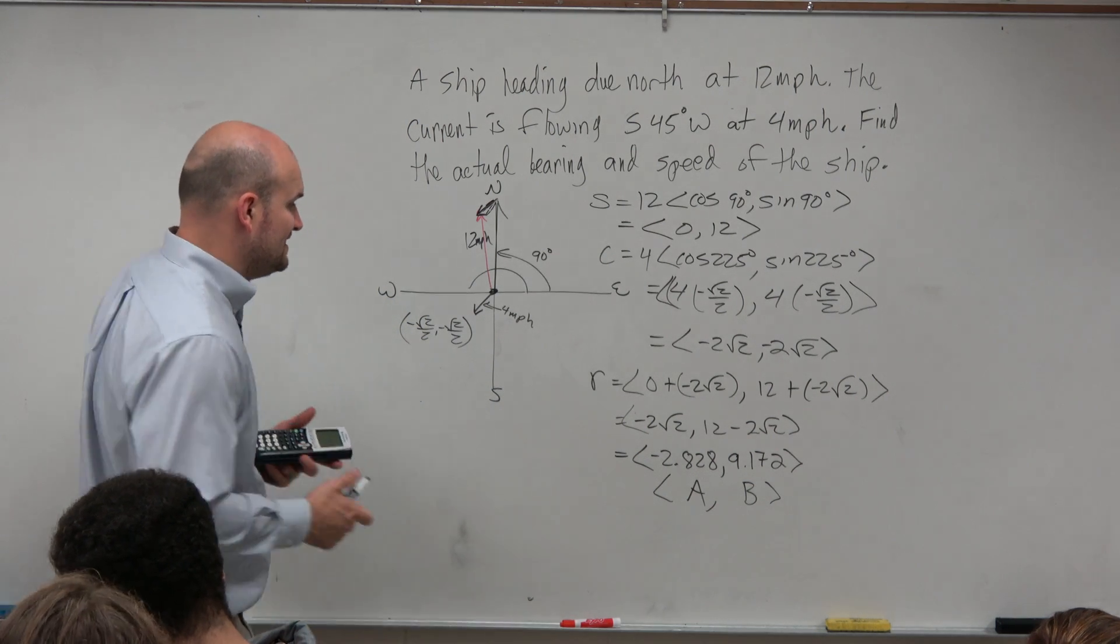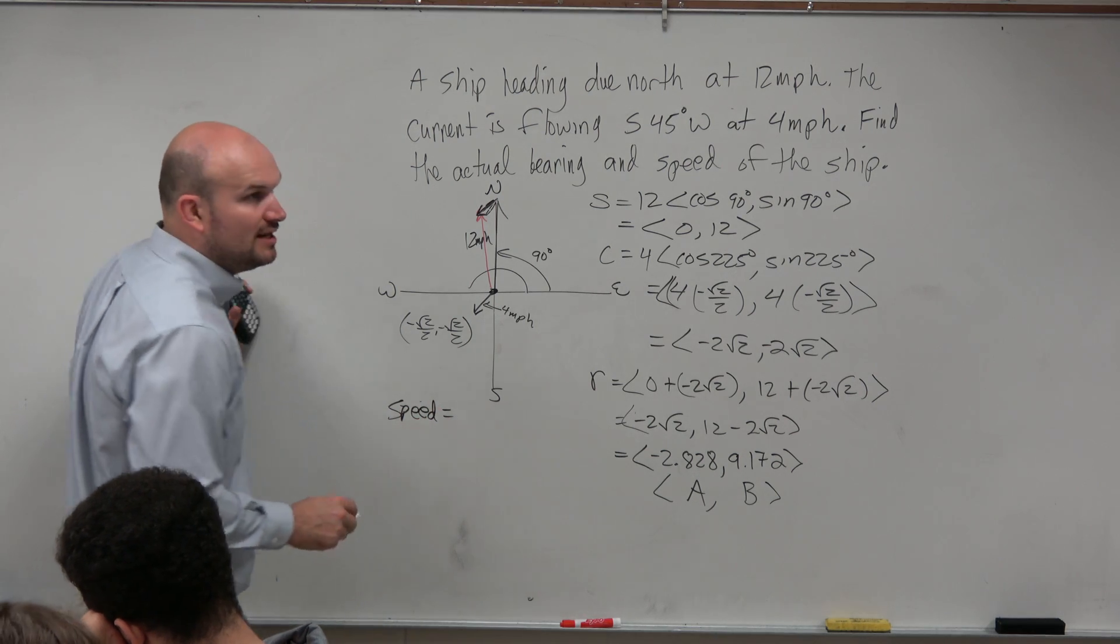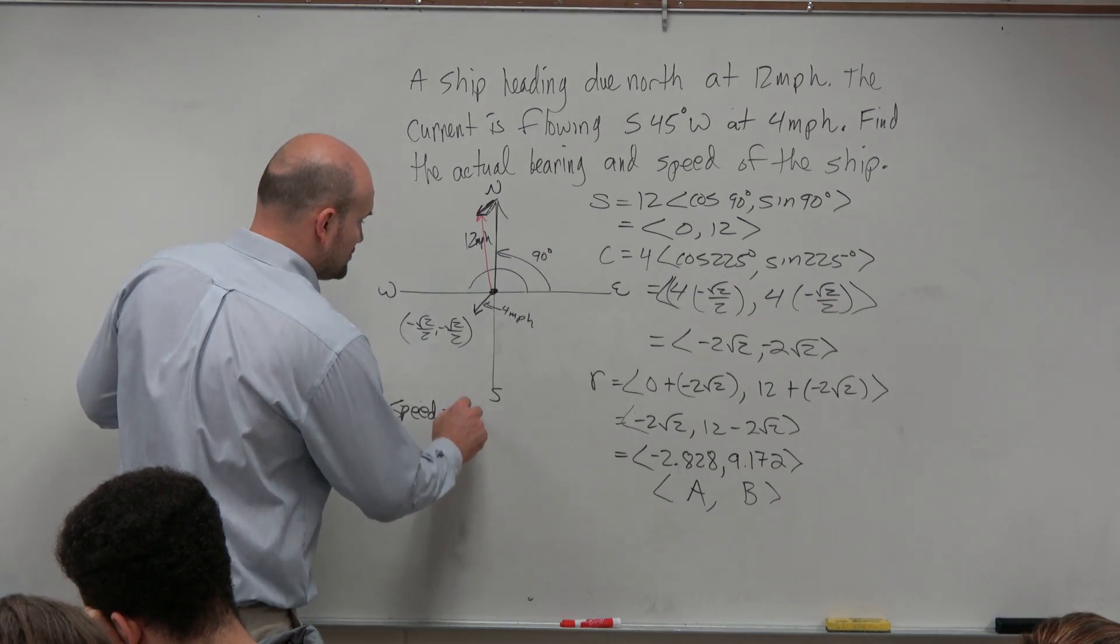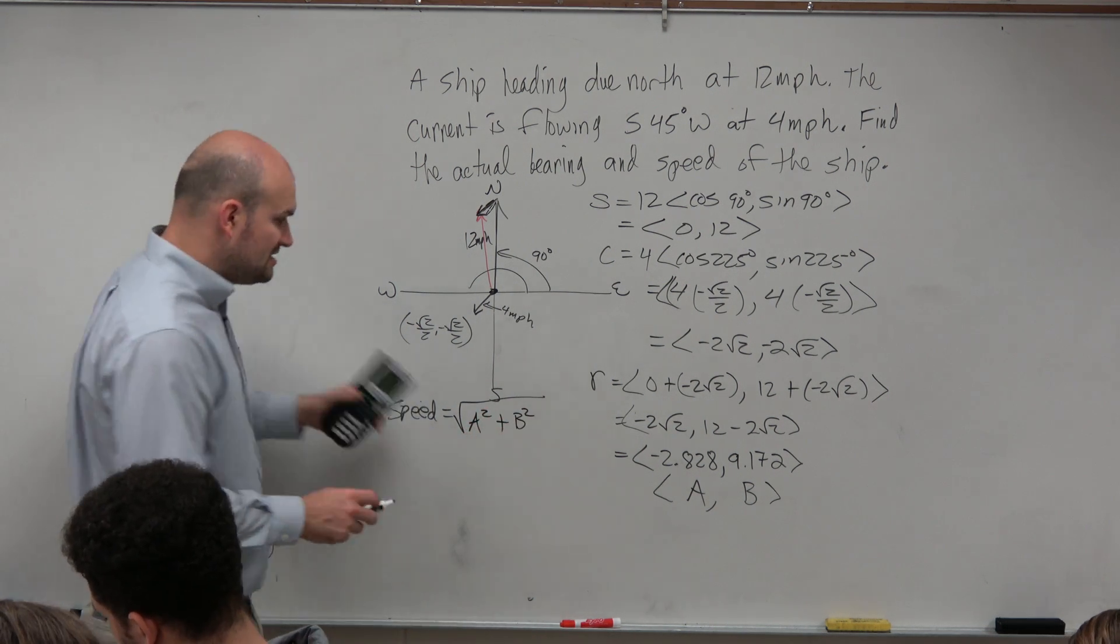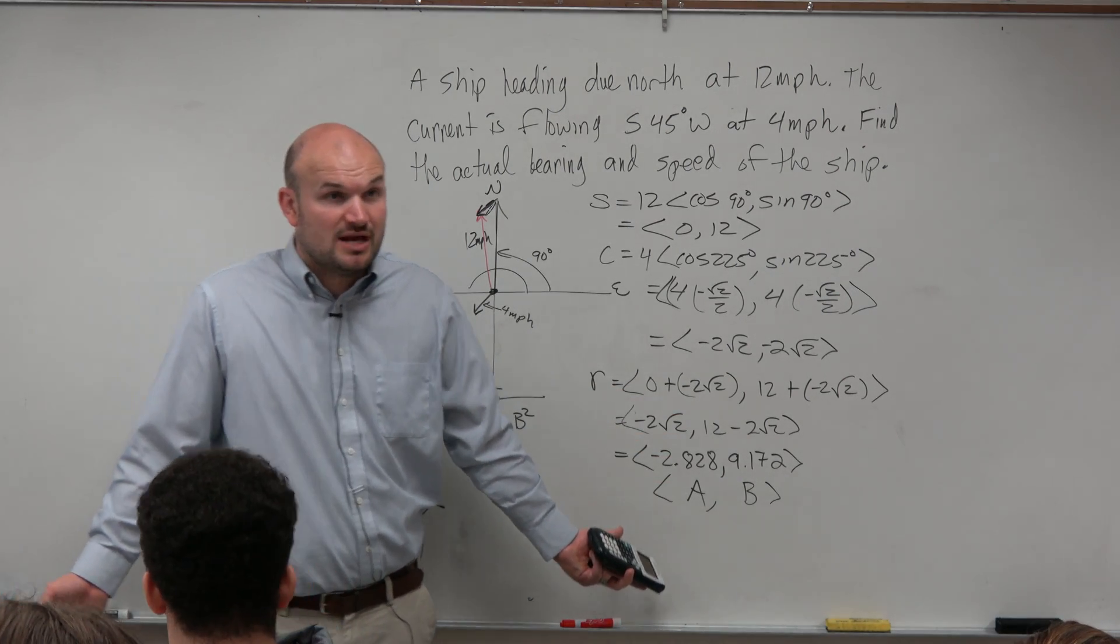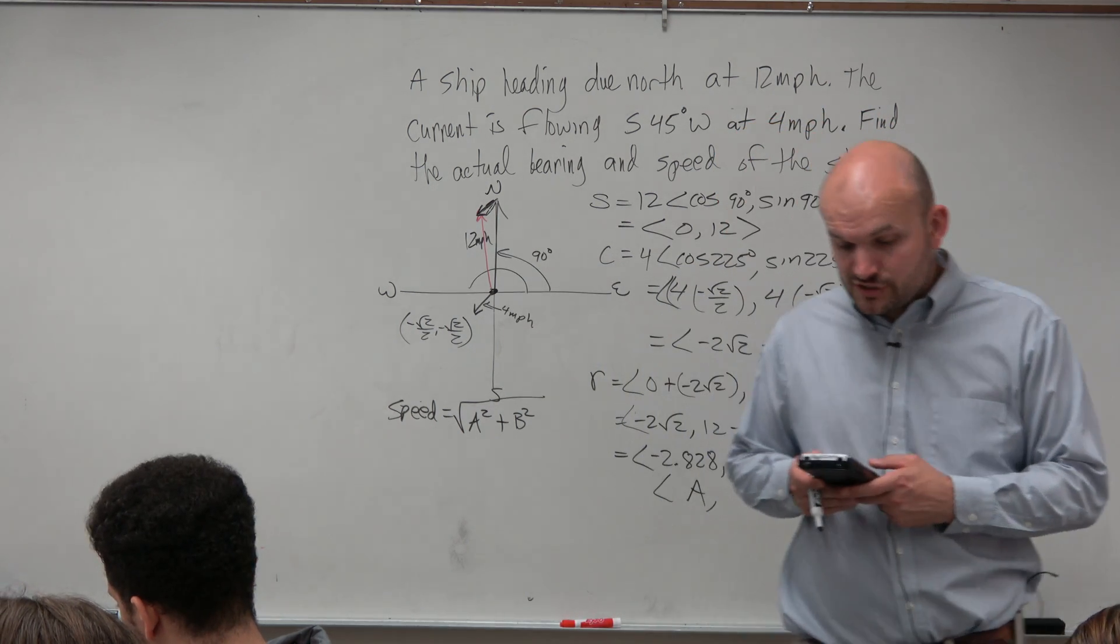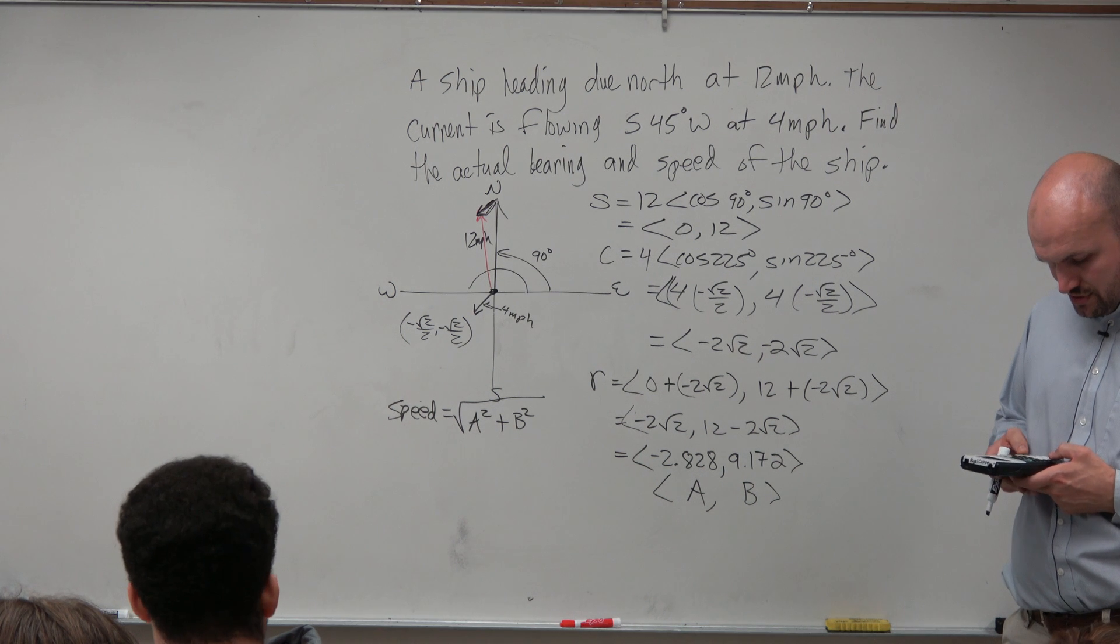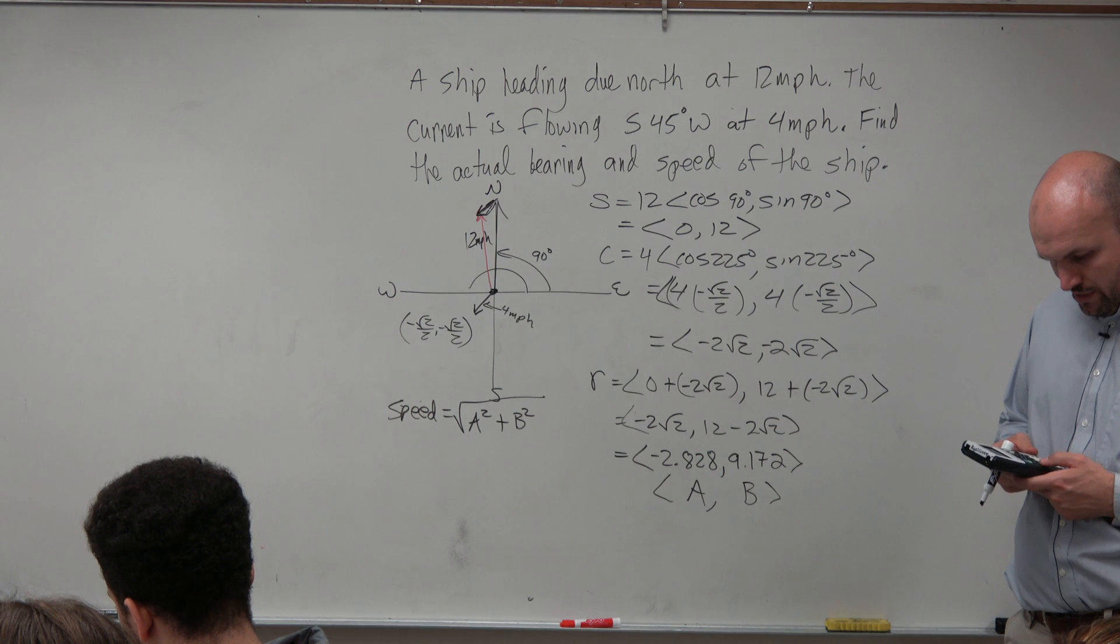But the reason why I want to store them, guys, is because if I want to find the speed, right, the speed of the ship is what? Remember, it's written there. It's the magnitude. So that means I need to take the square root of A squared plus B squared. Well, it's much easier if I have these stored as A rather than using all those digits, right? Because we don't want to use a rounded number, correct? We don't want to use rounded numbers, so we're going to want to store them rather than writing them all down.